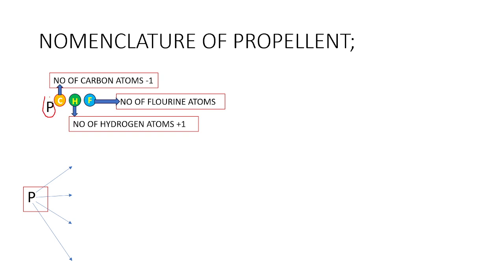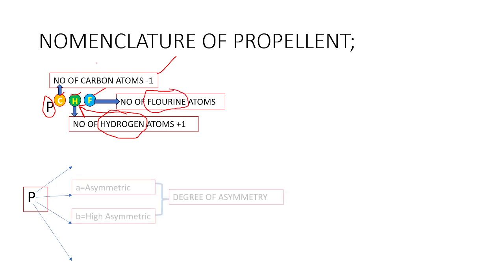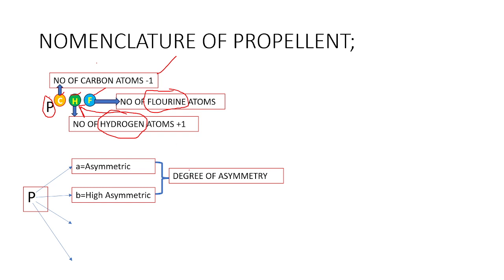P stands for propellant, followed by CHF. C is the number of carbon atoms minus one. H is the number of hydrogen atoms plus one. F is the number of fluorine atoms.